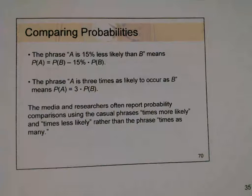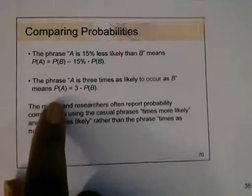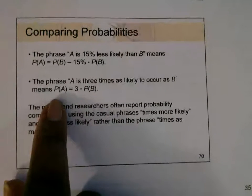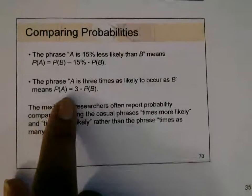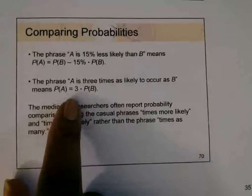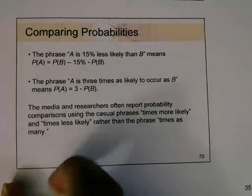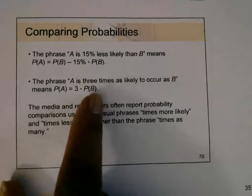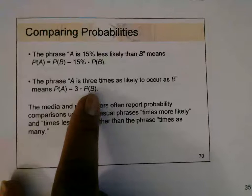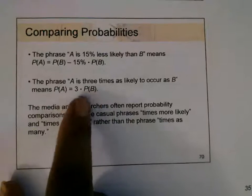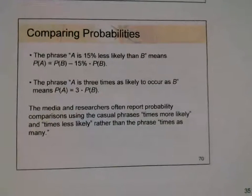The phrase 'A is three times as likely to occur as B' means this: the probability of event A equals three times as likely to occur as B. So the probability of event B will be multiplied by three.